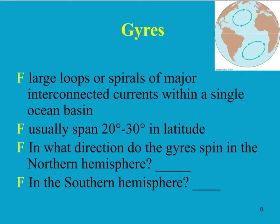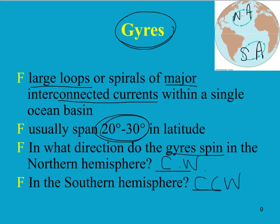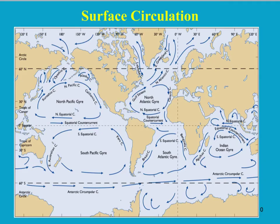These large circular loops of water movement on the surface are called gyres. A gyre is simply a large loop of major connected currents in an ocean basin. There are four main gyres for our class activity: the north Atlantic, the south Atlantic, the north Pacific, and the south Pacific. They usually span about 20 to 30 degrees in latitude. In the northern hemisphere, gyres spin clockwise; in the southern hemisphere, counterclockwise.